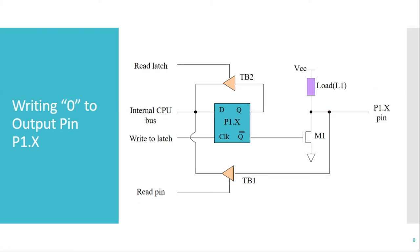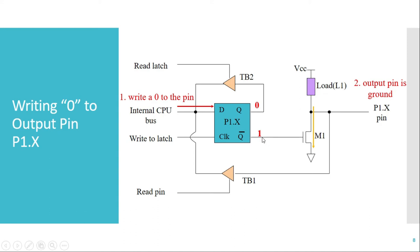Whenever we want to write logic 0 to the output pin, the process is the same — instead of writing 1 to the CPU bus, we write 0. Q becomes 0 and Q-bar becomes 1. Whenever Q-bar is 1, the transistor turns on and there is a short between drain and source, connecting the pin to ground. So the logic on the pin becomes 0.